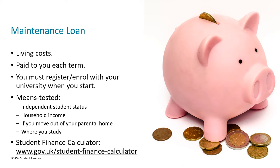The next part of student finance is called the maintenance loan. This is designed to cover your living costs whilst you're at university. It's typically paid to you in three termly instalments at the start of each term, but to receive the first payment once you arrive at university you need to make sure that you register — this is often a process called enrolment. Once you've done this the university lets the student finance company know and they're then able to release the first maintenance payment to you. The money you're able to receive as part of your maintenance loan is decided based on different factors through a process called means testing.